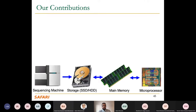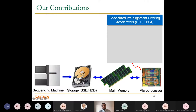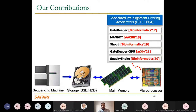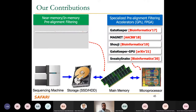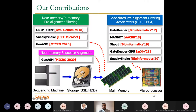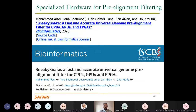Looking at the hardware stack, data flows from the sequencing machine's SSD through main memory to caches to the CPU. We tackle different stages: specialized pre-alignment filtering on FPGAs and GPUs, in-memory and near-memory processing for genomic data, and most recently processing inside the SSD itself.